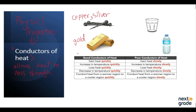We are going to discuss some characteristics of good conductors of heat. First, they gain heat quickly — when heated, they absorb heat and their temperature rises quickly. They also lose heat quickly; as much heat as they gain, they also lose, and their temperature decreases quickly.